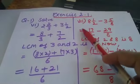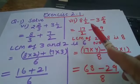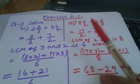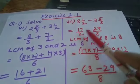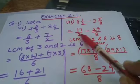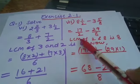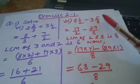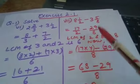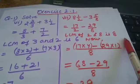Let us discuss part 7, where you have to find the difference. This is also a subtraction of mixed fractions. Again, convert them to improper fractions first: the first gives 17 by 2, and the second gives 29 by 8. The same process you follow in addition applies to subtraction. The LCM of the denominators 2 and 8 is 8.